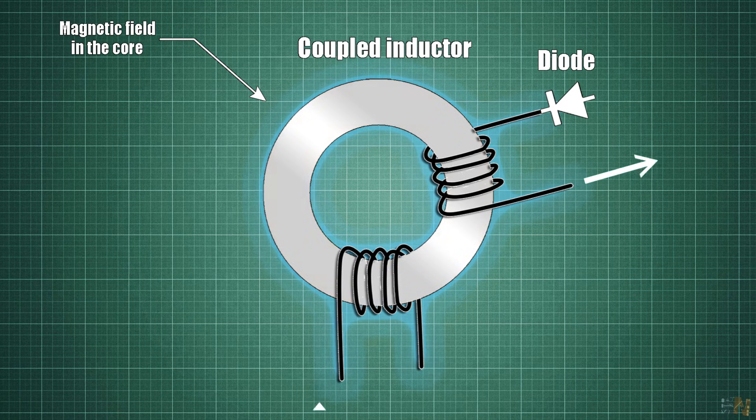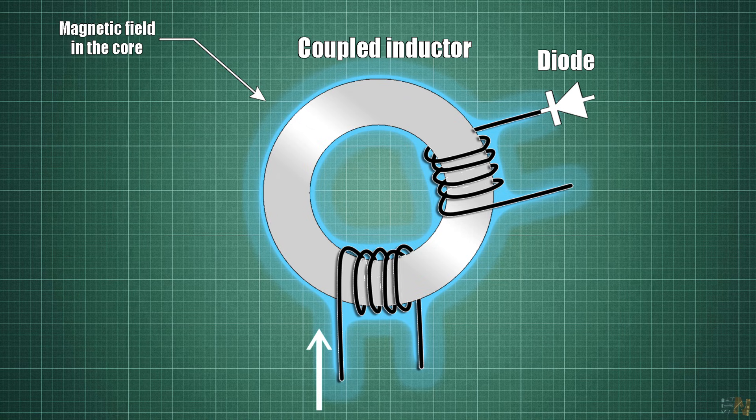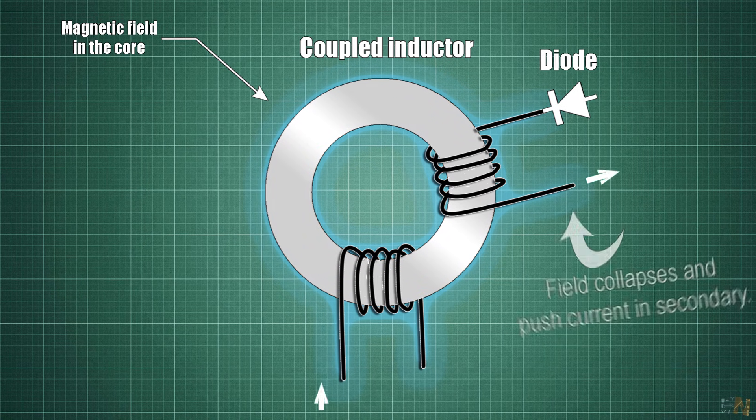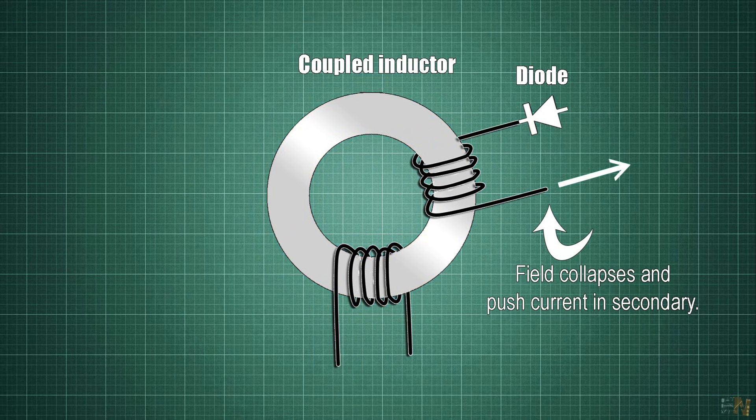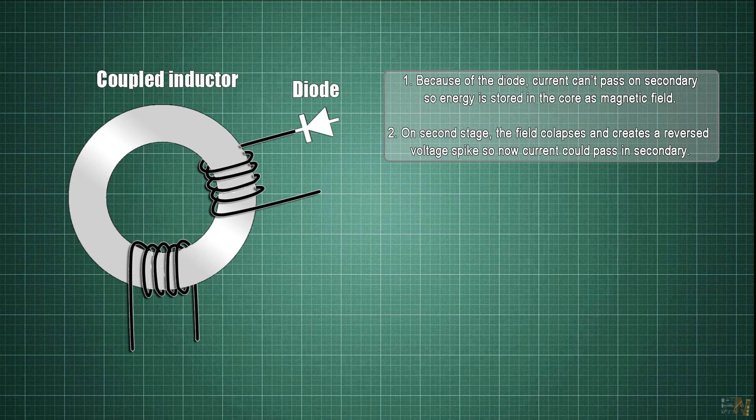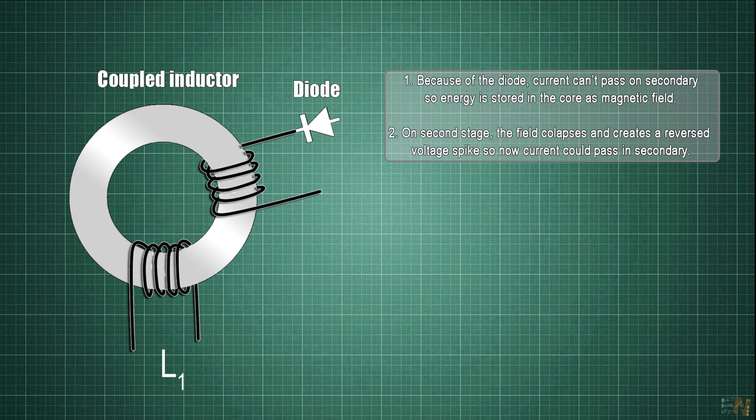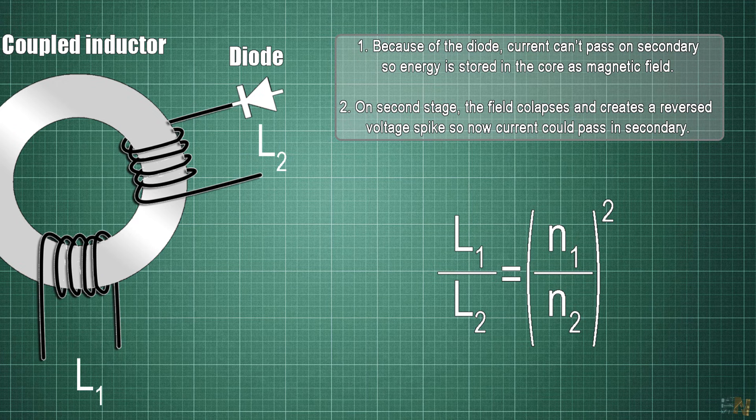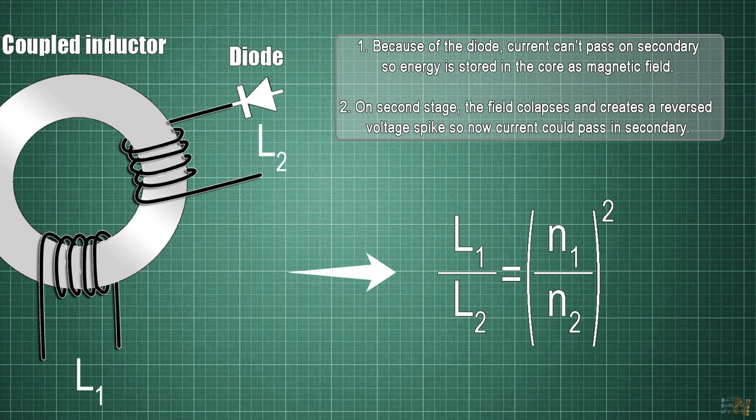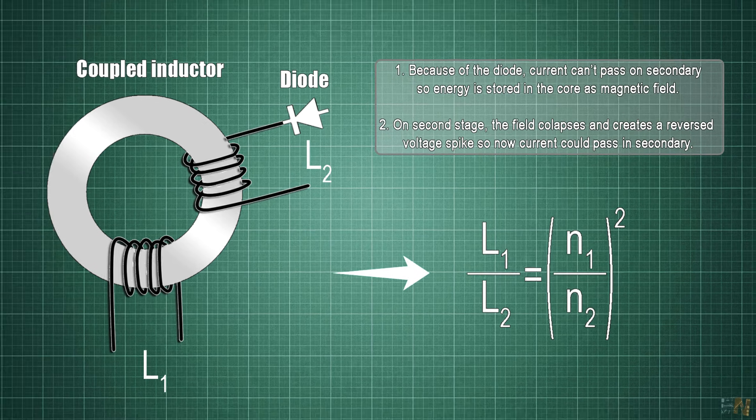Then in the second stage of voltage conversion, when we cut the current from the primary, the magnetic field created will collapse and push current in the opposite way in the secondary winding. That's why in this configuration our transformer acts as a coupled inductor. But if you look at current and voltage values, the coupled inductor acts as a transformer so we could have a gain, and the inductance ratio is given by this formula where N is the amount of turns of each winding.